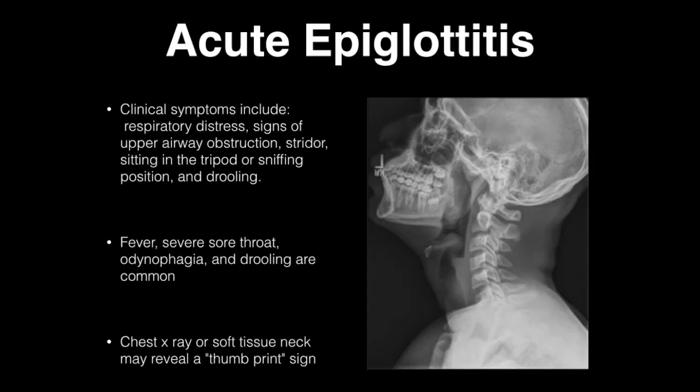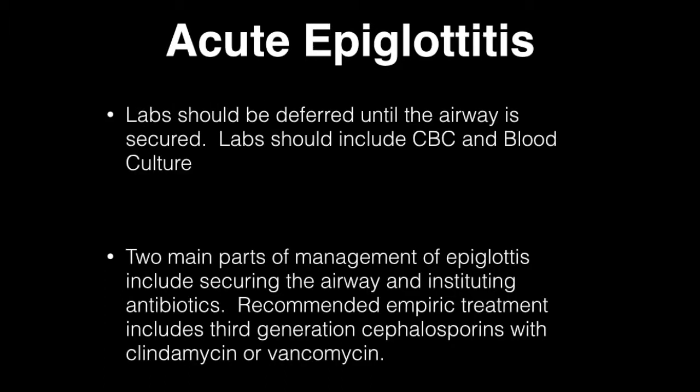Clinical symptoms include respiratory distress, stridor, sitting in the tripod or sniffing position, and drooling. Fever, severe sore throat, odynophagia, and drooling are common. Chest x-ray or soft tissue neck may reveal a thumbprint sign. Labs should be deferred until the airway is secured, then should include a CBC and blood culture.